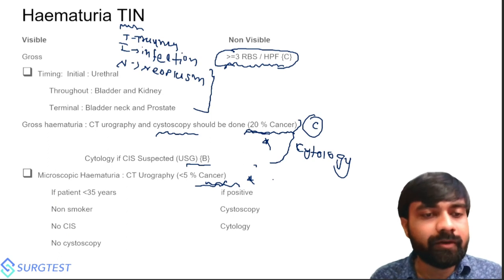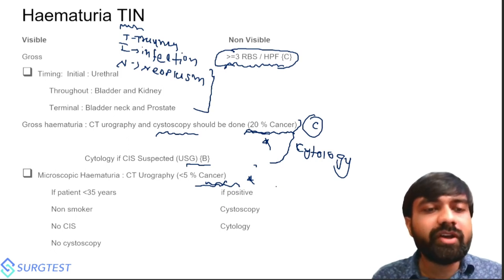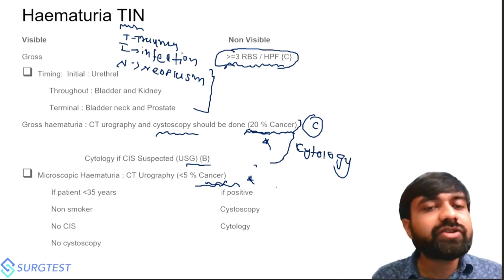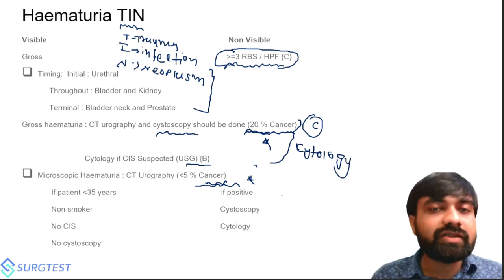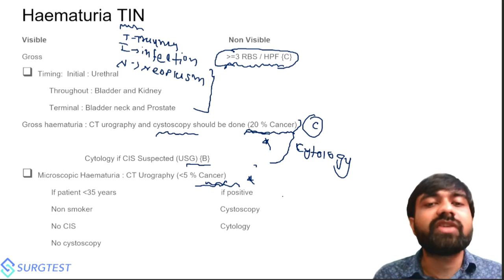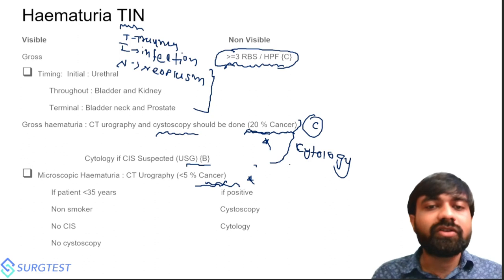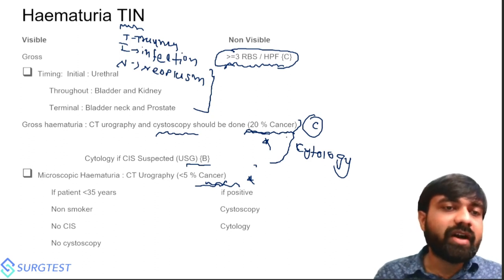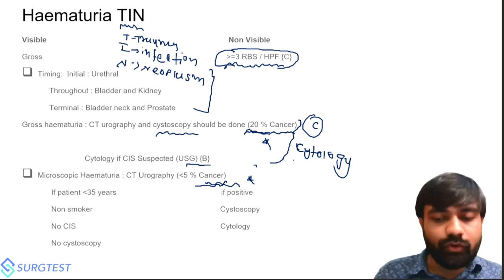Cystoscopy is an invasive procedure, so in microscopic hematuria you should not do it in all patients. You should do cystoscopy in patients with smoking history, age over 35, dysuria, or CIS symptoms — those with higher chances of malignancy. Remember: timing of hematuria is important, non-visible hematuria definition is important, and the 20% versus 5% malignancy data are all critical points for MCQs.